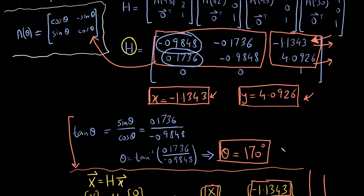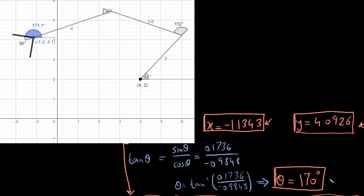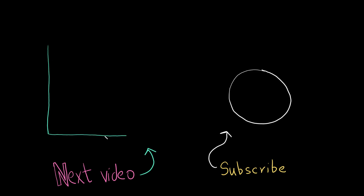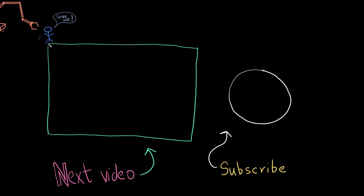I used software to draw this robot for this particular configuration, and you can see that the x, y values and orientation we obtained from our equations match the actual result. If you got this correct, good job. If you have any questions, leave them in the comments below, don't forget to subscribe, and see you in the next video.